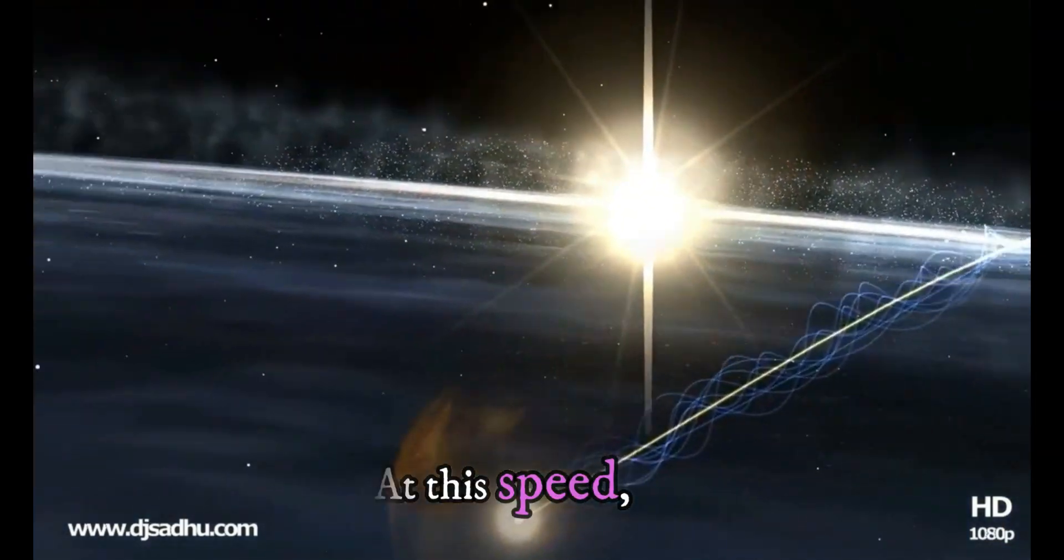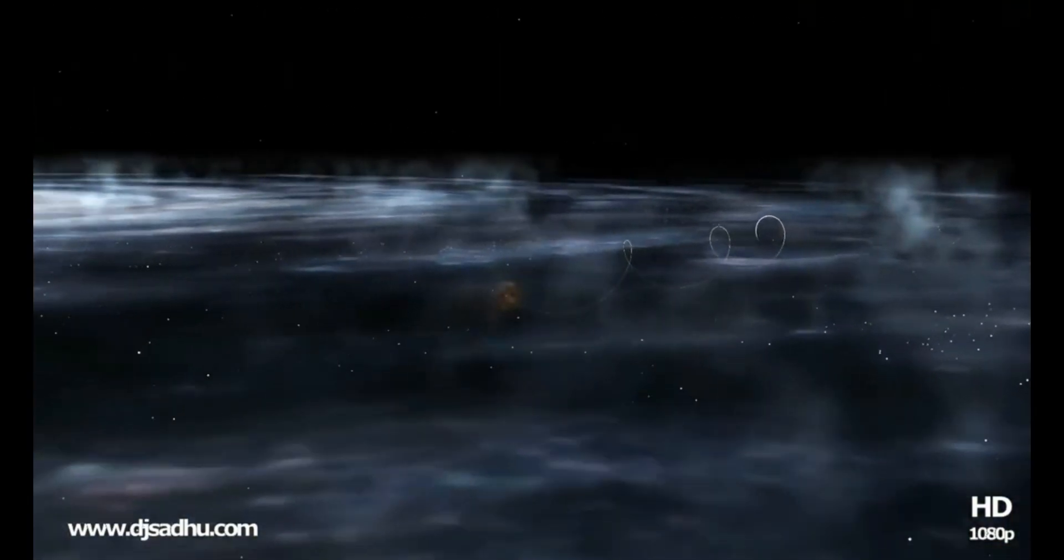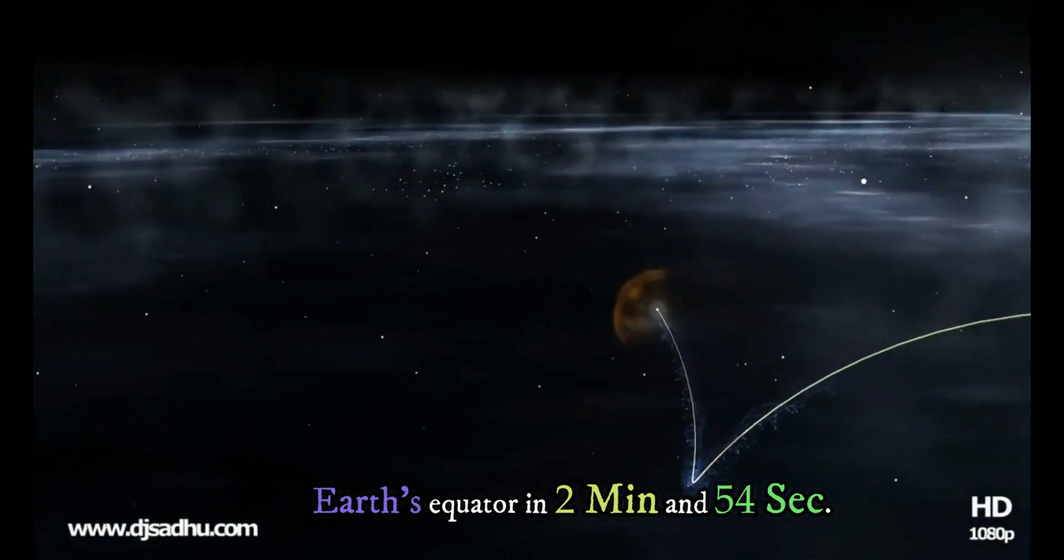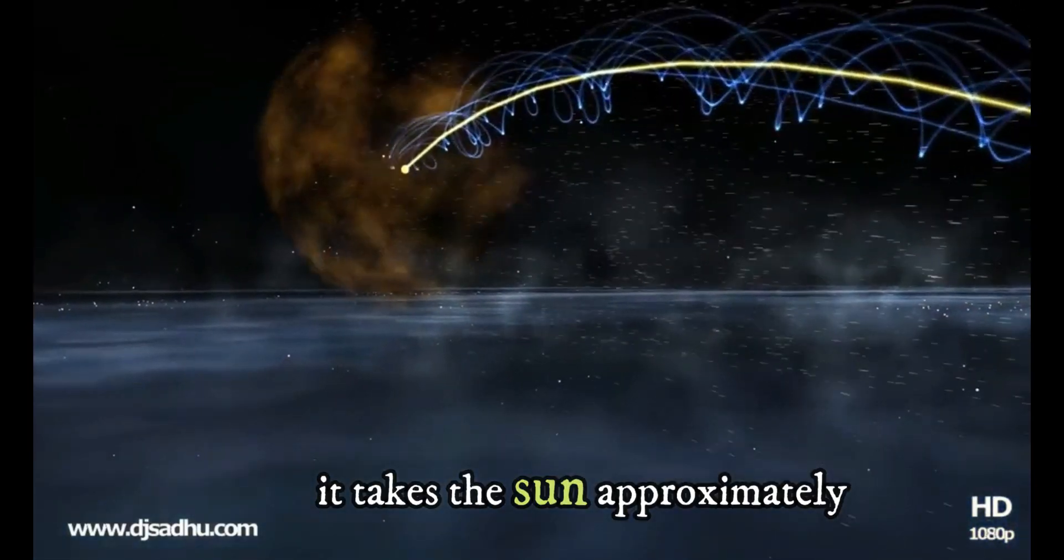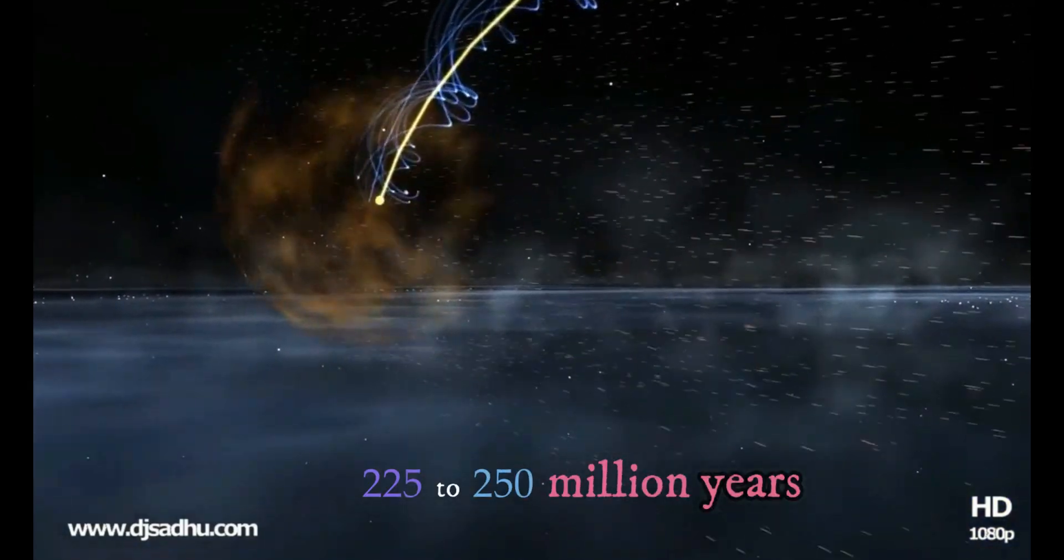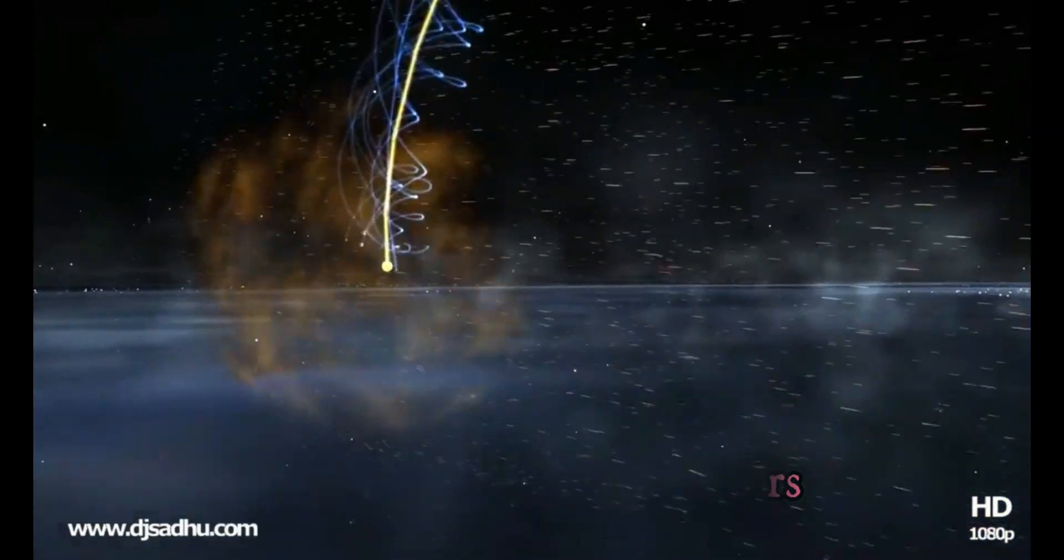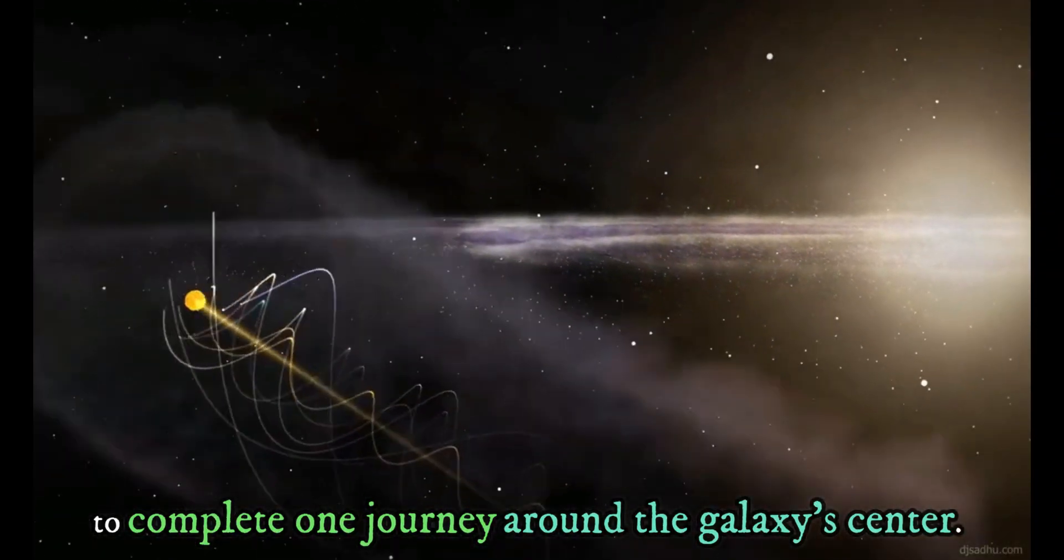At this speed, an object could travel around the Earth's equator in two minutes and 54 seconds. Even at this blazing speed, it takes the Sun approximately 225 to 250 million years to complete one journey around the galaxy's center.